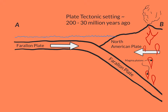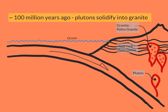From about 200 million to about 30 million years ago, subduction generated huge volumes of magma, which rose up through the crust as Plutons. Plutons rose up through the crust, eventually solidifying at depths of 10 to 15 miles deep.